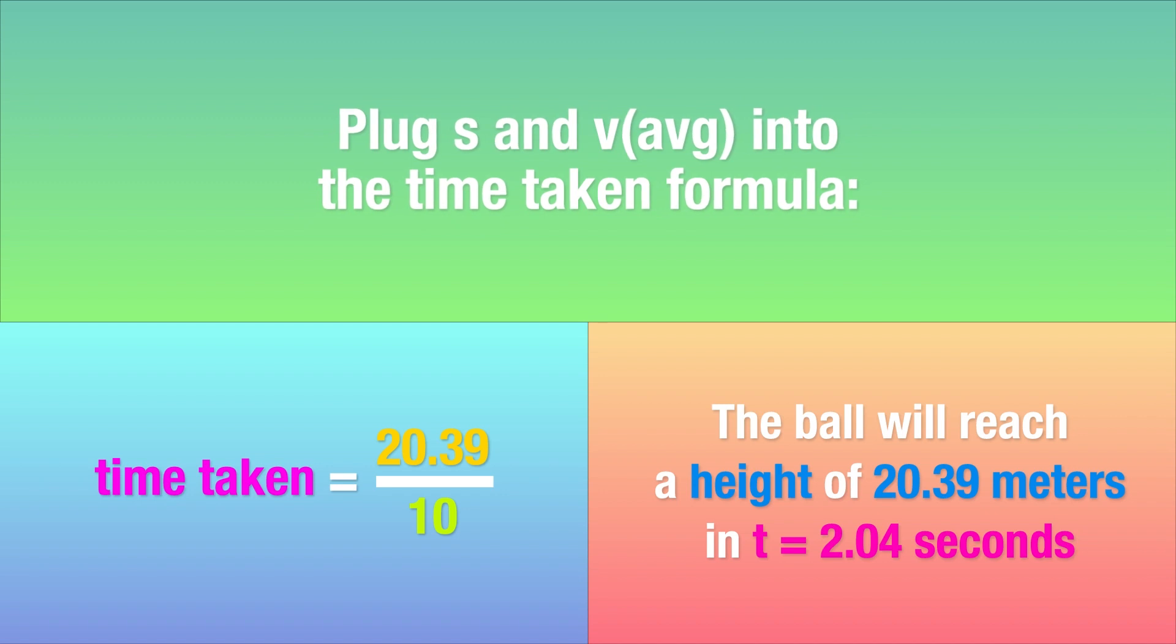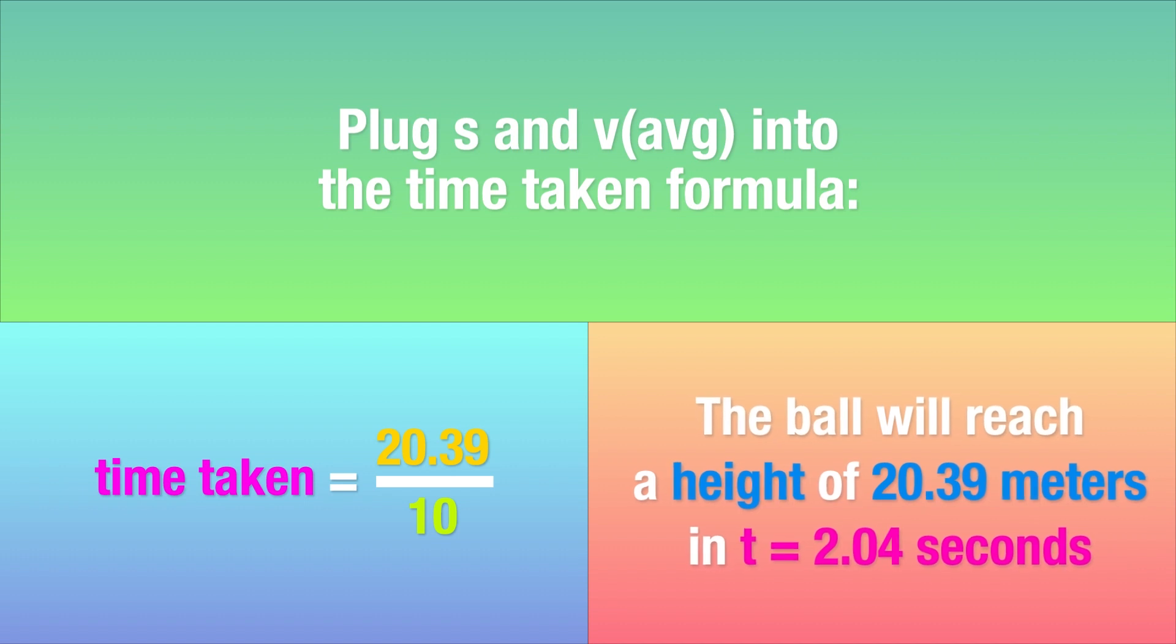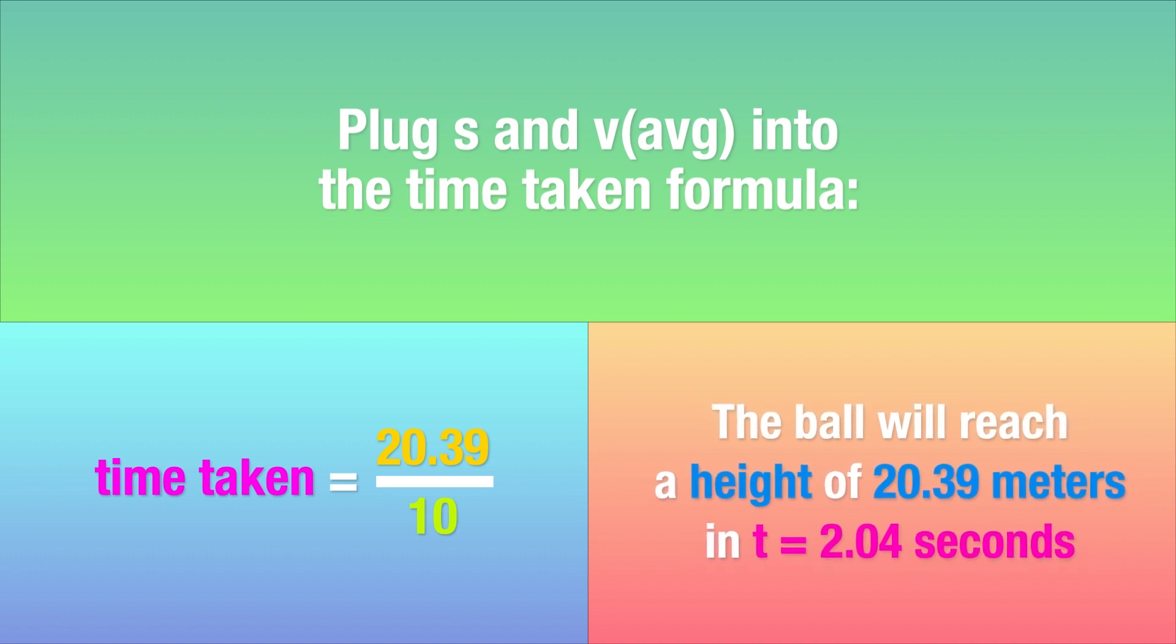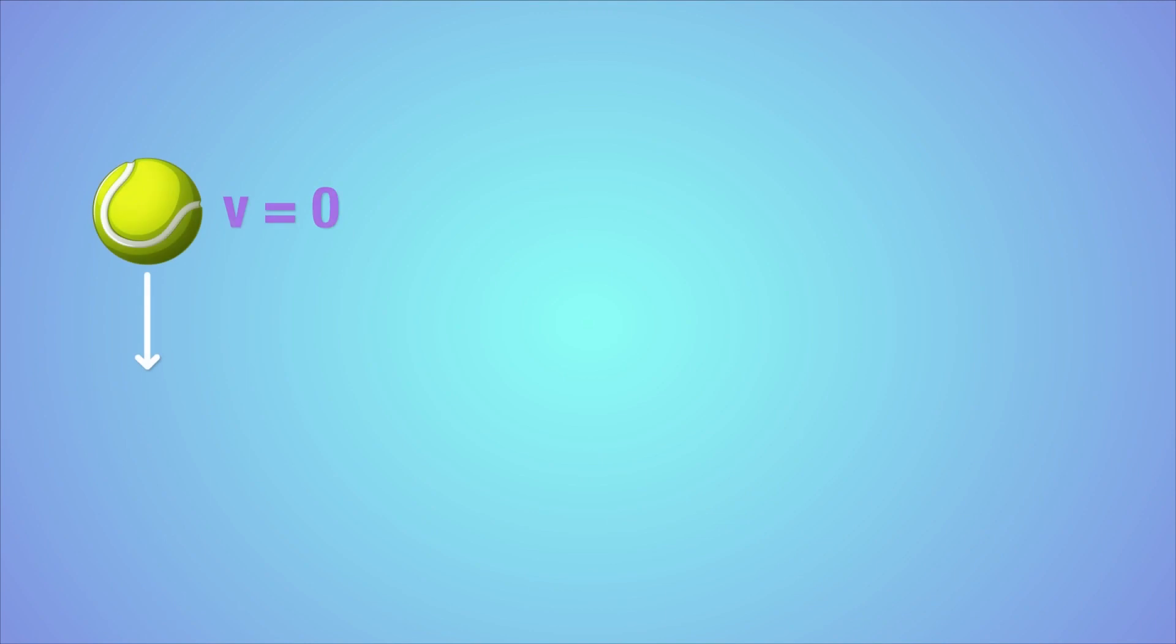This means the ball launched into the air at 20 meters per second will reach a height of 20.39 meters in about 2.04 seconds. Now since the distance back to the ground is also 20.39 meters, and the ball will undergo the same acceleration of 9.81 meters per second square, the time taken for the ball to reach the ground should once again be 2.04 seconds.